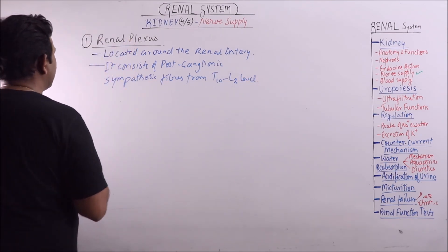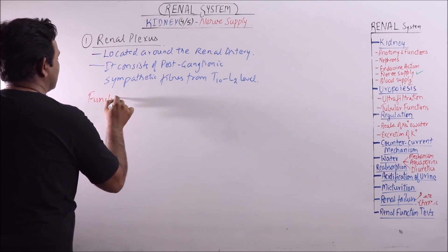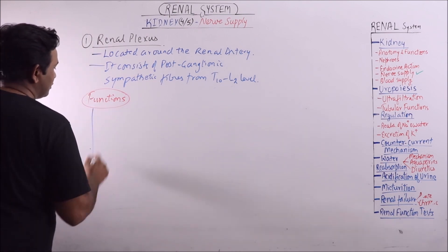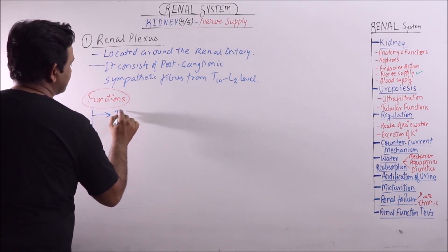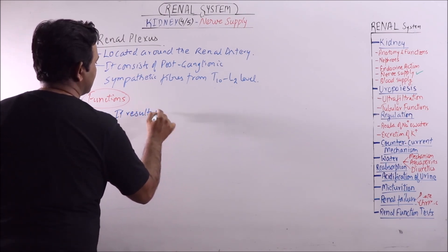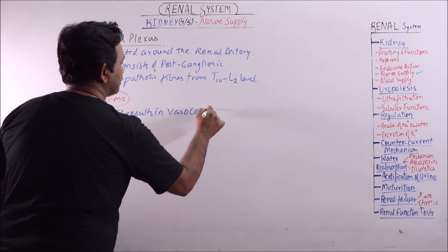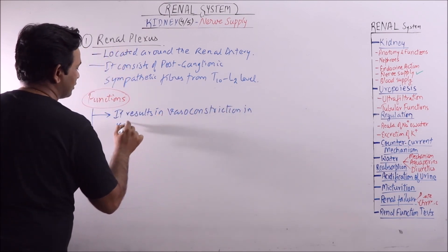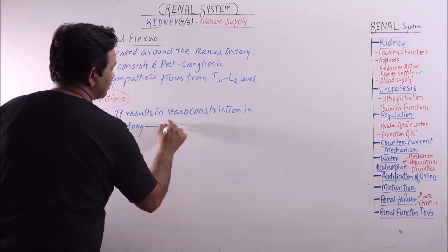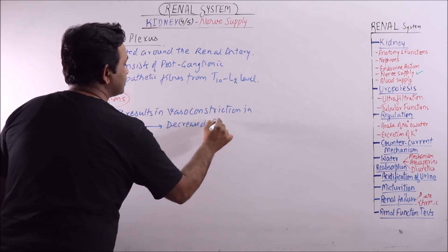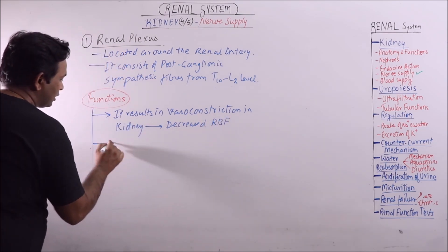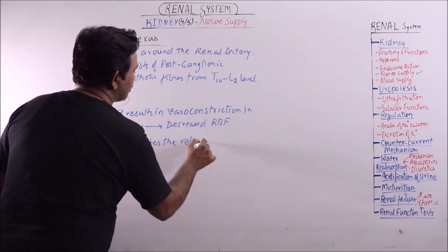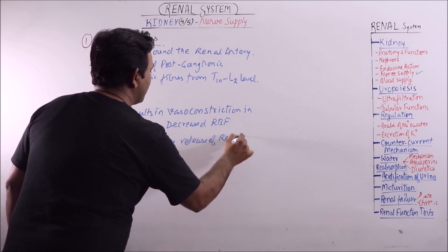Now, what is the function? When the renal plexus is activated, it results in vasoconstriction in the kidney. This leads to decreased renal blood flow. Another function is that it regulates the release of renin.